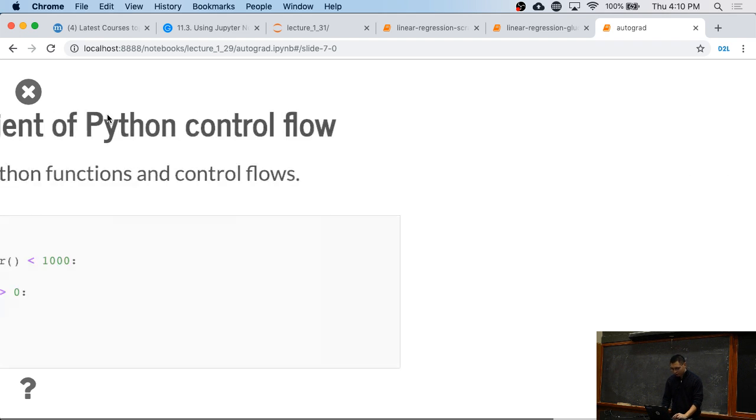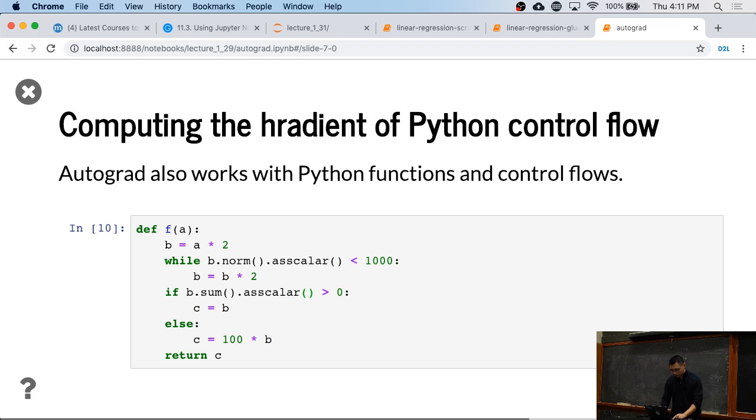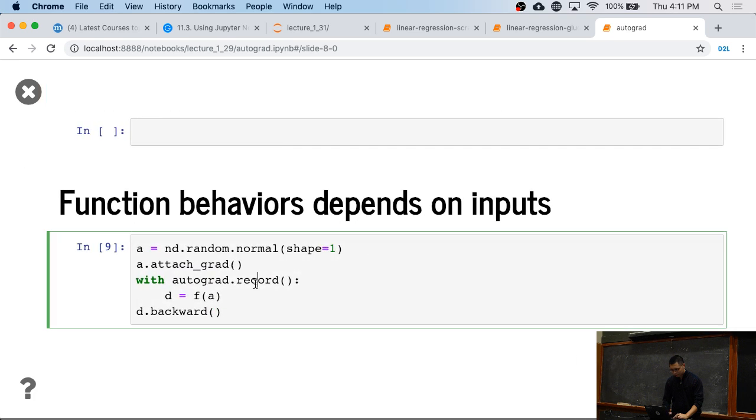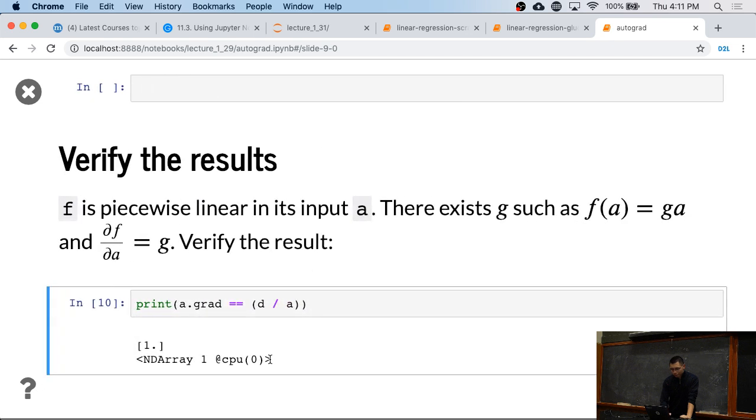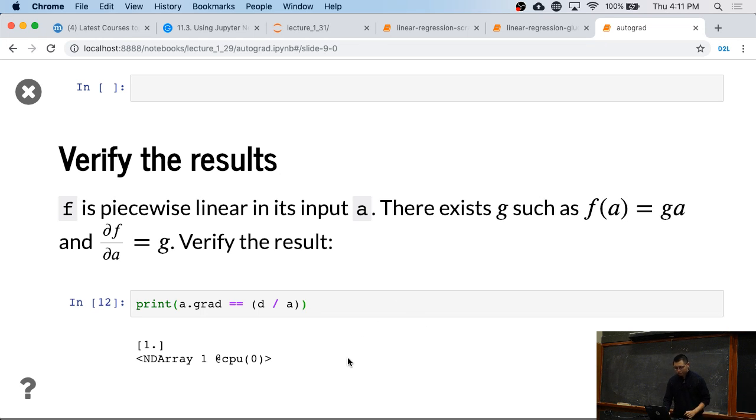Then let's verify the results. Because even that's a pretty dynamic function, the final result is still a linear function of a. We know that there exists a g, so that f(a) equals g times a. Which means the gradient of d with respect to a is equal to g. So we can verify the results by get the result d divided by a and compare it to the grad, the gradients. So we can verify the results. But that is, even that you write in Python control flows, you can still do the autograd. That's a pretty major benefit compared to building the computation graph explicitly, because you need to write in control flow operators for that.